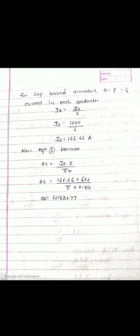Now substituting into equation 2: AC = I_Z times Z divided by pi D. Putting in I_Z = 166.67, Z = 660, D = 0.84, we get AC = 41681.77 ampere-conductors per metre. So that is the specific electric loading. Like that we calculate the values of specific magnetic loading and specific electric loading.